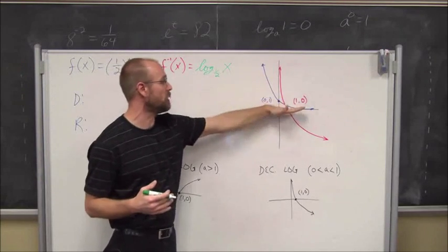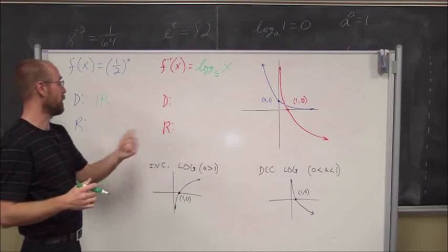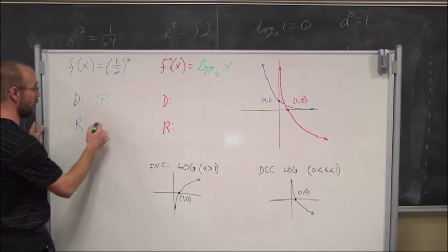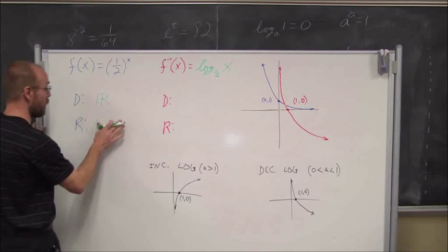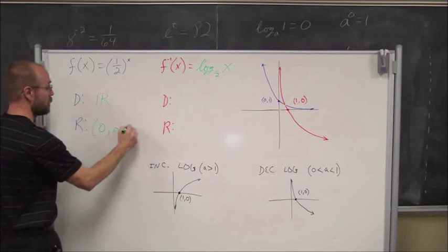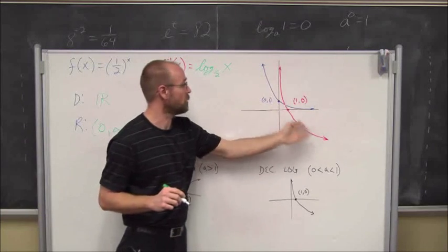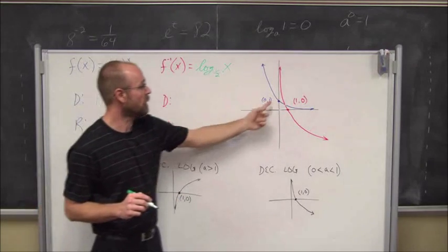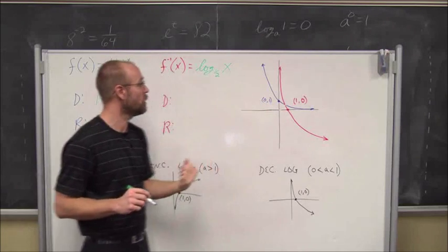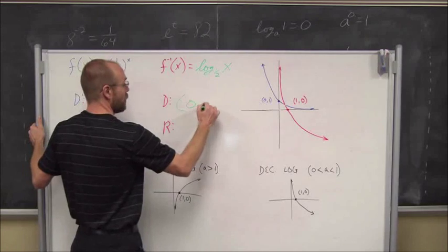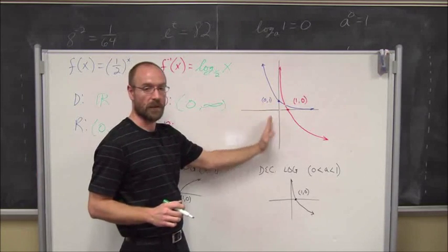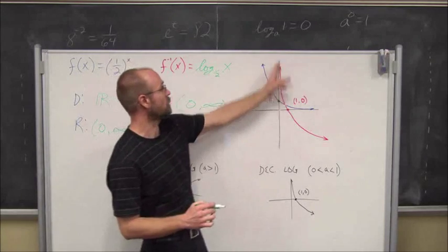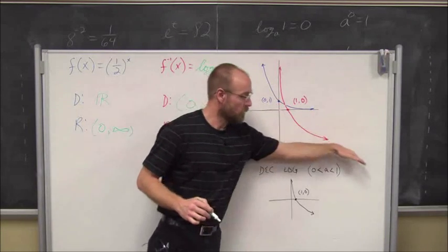The exponential function is decreasing, so its range is from 0 to infinity. Looking at the inverse in red, we see it's also a decreasing function — just like the exponent was decreasing, the logarithm is also decreasing. Our reference points go from 0,1 to 1,0. The domain of the logarithm is the range of the exponential function. There are no values less than or equal to 0, with the vertical asymptote at the y-axis. And the range is all real numbers, from negative infinity to positive infinity.